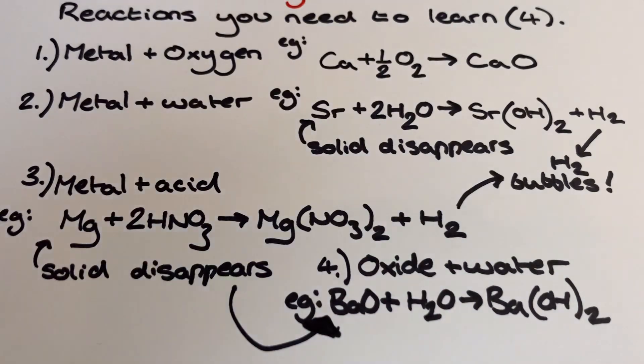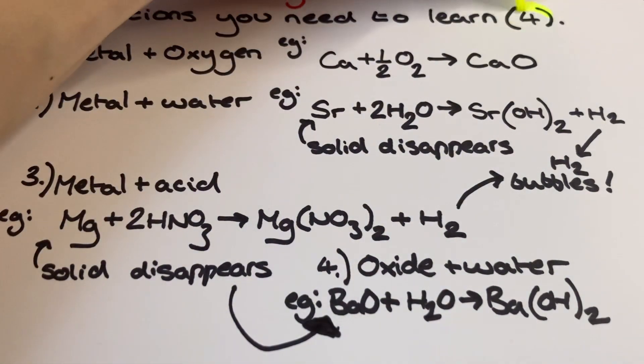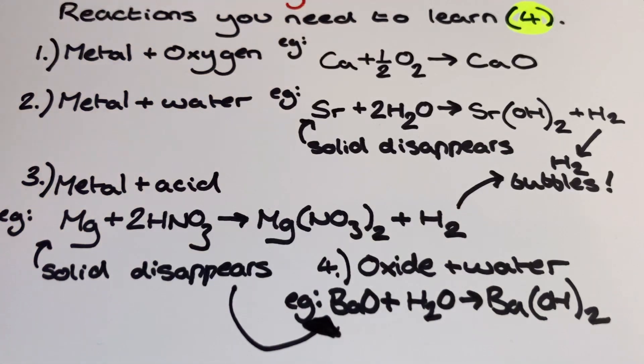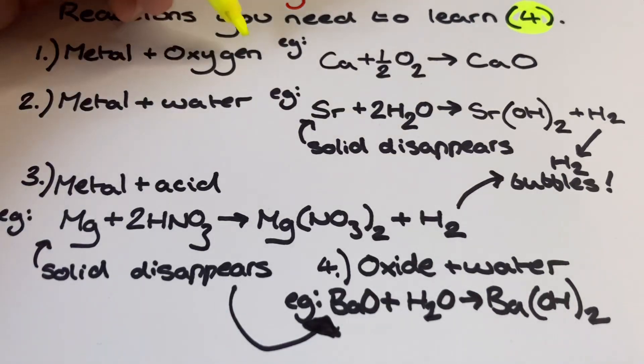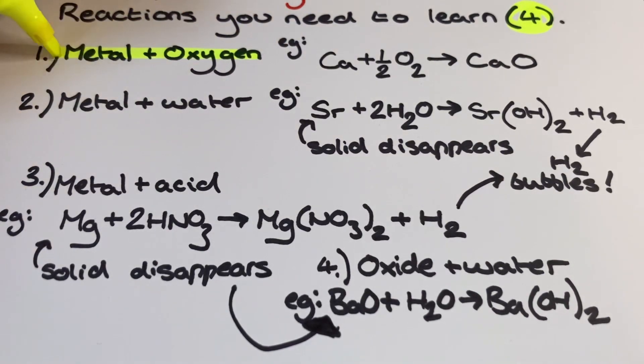The first reaction out of these four is the metal with oxygen. This is really easy and consistent to balance. One mole of the group 2 metal reacts with half a mole of oxygen to produce one mole of the group 2 metal oxide each time.